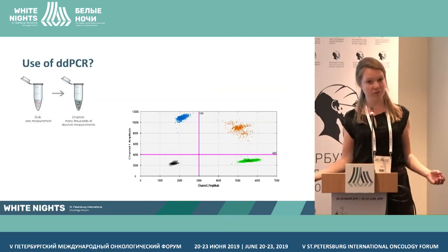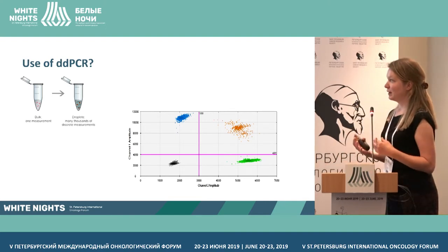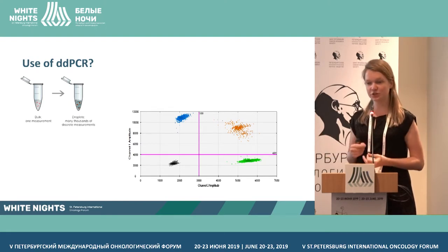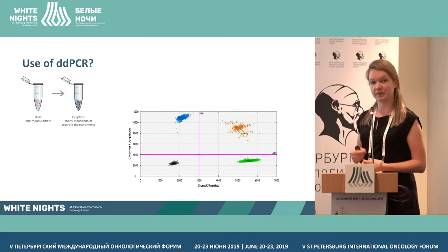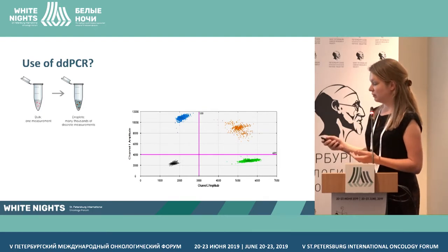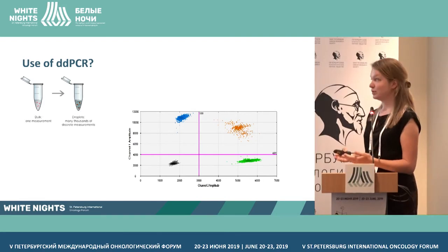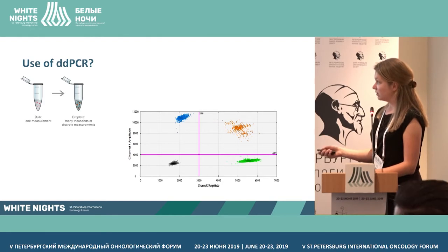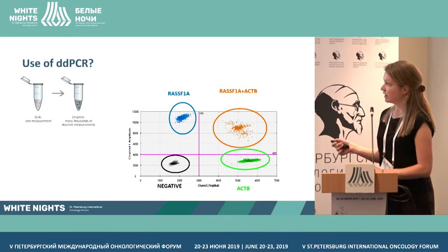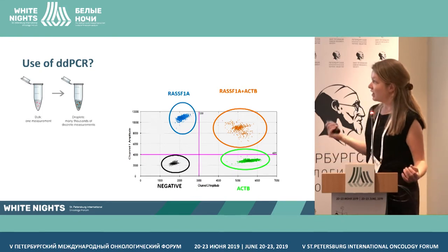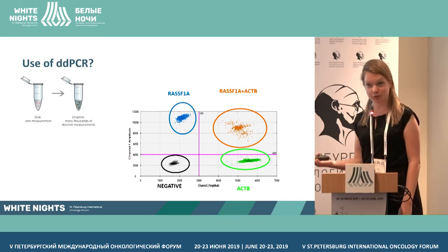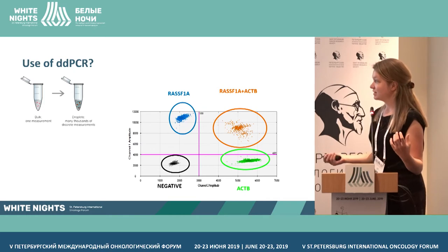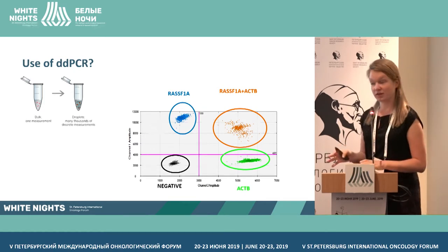So we thought, can we use droplet digital PCR? In this PCR, you divide your bulk sample into up to 20,000 droplets, and in each droplet you perform a PCR. The idea is that in many of those droplets there's just one or maybe two copies of DNA. The results show droplets positive for RASSF1A, droplets positive for a reference gene — actin-beta — droplets containing both, and droplets containing nothing.